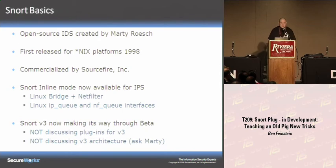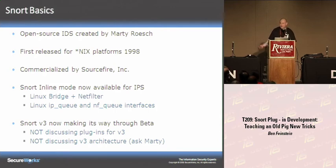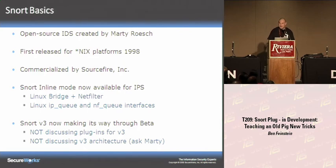Some basics. Snort is an open source IDS and IPS that was originally created by Marty Roche. He released it back in 1998, and it was commercialized later by Sourcefire Inc. There's an inline mode available — essentially IPS — that typically uses a Linux bridge plus netfilter, with IPQ and NFQ interfaces to queue packets in and out of kernel space through Snort so it can make verdicts on how to take action on those packets and streams.